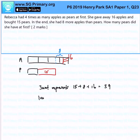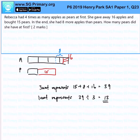So, 1 unit will represent 39 divided by 3, which is 13. Since pears has 1 unit, this is the amount of pears Rebecca had at first — 13 pears.